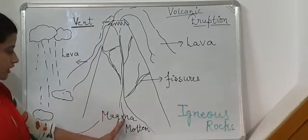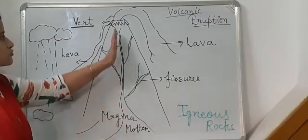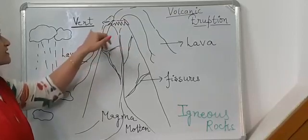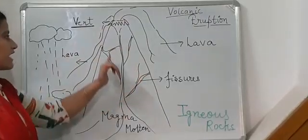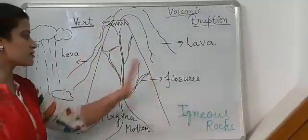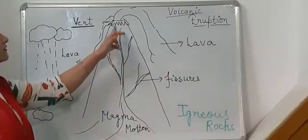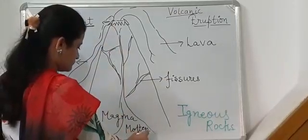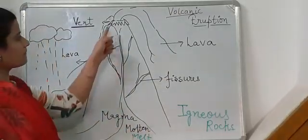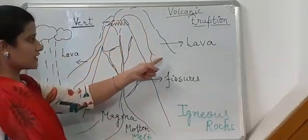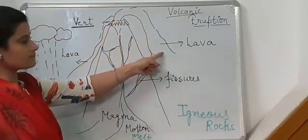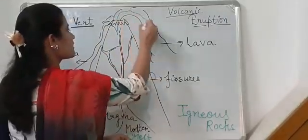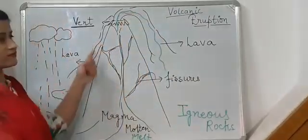That molten magma rises to the vent. The vent is the opening — the mouth — of the volcanic mountain. The cracks in the mountain are known as fissures. That molten magma comes outside the volcanic mountain and becomes lava. It can come through the fissure or through the vent.